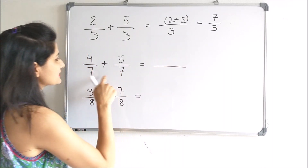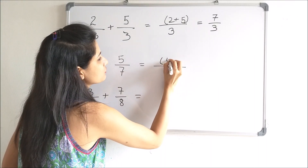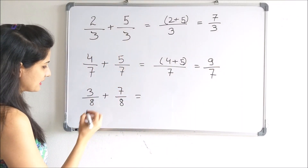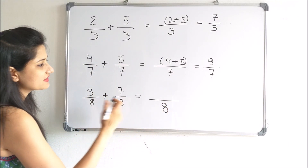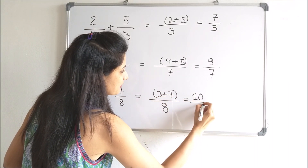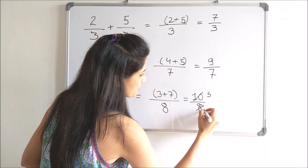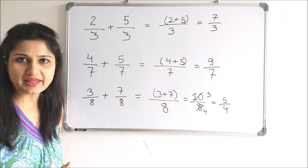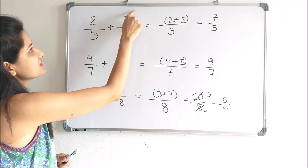Here also, since the denominators are same, we will write the denominator as it is and we will add the numerators. We will add 4 and 5 which gives us 9 by 7. In this example also, since the denominator is same, we will add the numerators: 3 and 7, which gives us 10 by 8. Since it can be simplified further, we will divide by 2 which gives us 5 by 4. This is how we add two fractions with the same denominator — write the denominator as it is and add the numerators.